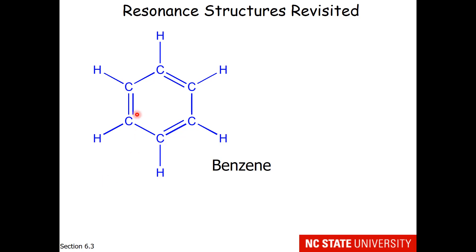If students were asked to draw a benzene ring, a portion of the students would draw the six-membered ring and then, to add the bonds between the carbons, they might go with a double bond, single bond, double bond arrangement.